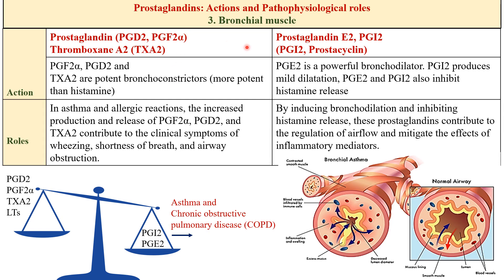Now the effect of prostaglandins on bronchial muscles and airways: prostaglandin D2, F2α, and thromboxane A2 are potent bronchoconstrictors that obstruct the airways. In asthma and allergic conditions, increased production of these prostaglandins contributes to clinical signs of wheezing — the whistle-type sound during breathing — shortness of breath, and difficulty breathing, all due to airway obstruction. On the opposite side, prostaglandin E2 and I2 are powerful bronchodilators.